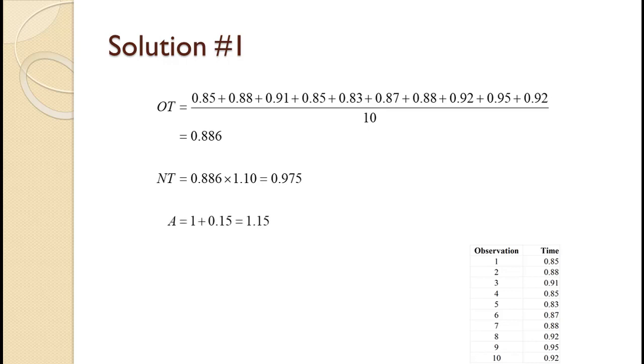The problem told us to use a job allowance factor, so A is just 1 plus 0.15 equals 1.15. Standard time is just the normal time of 0.975 times the allowance factor of 1.15. That equals 1.121.